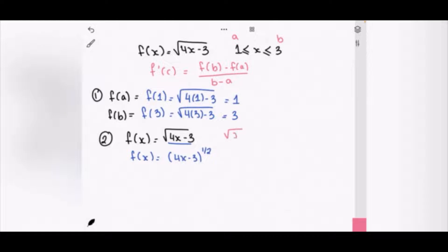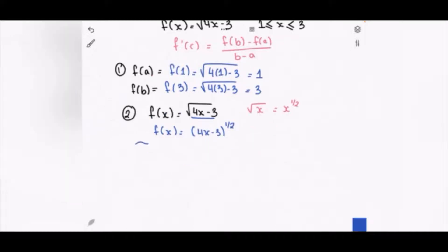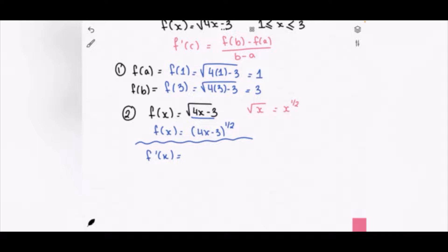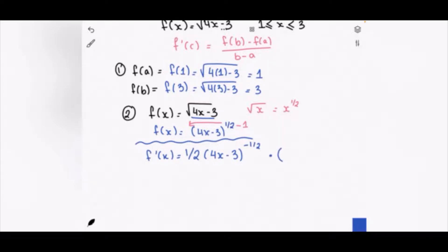Because √x = x^(1/2). Now we find the derivative using the chain rule. We multiply 1/2 by the coefficient in front of the bracket: 1/2 × 1 = 1/2. We bring down (4x - 3) with the new power of (1/2 - 1) = -1/2, then multiply by the derivative of (4x - 3), which is 4.